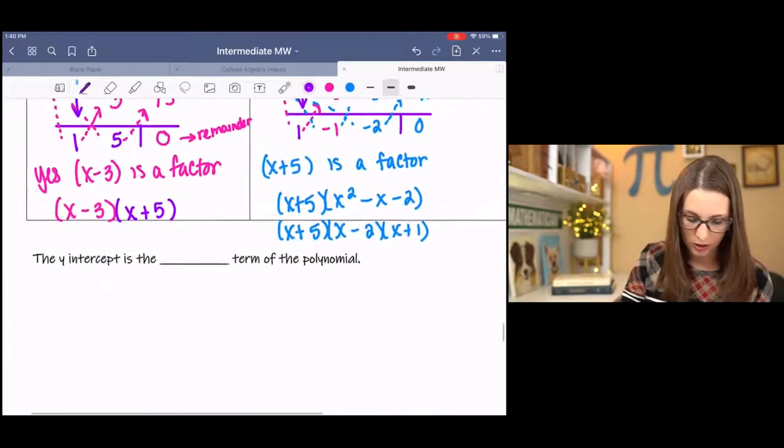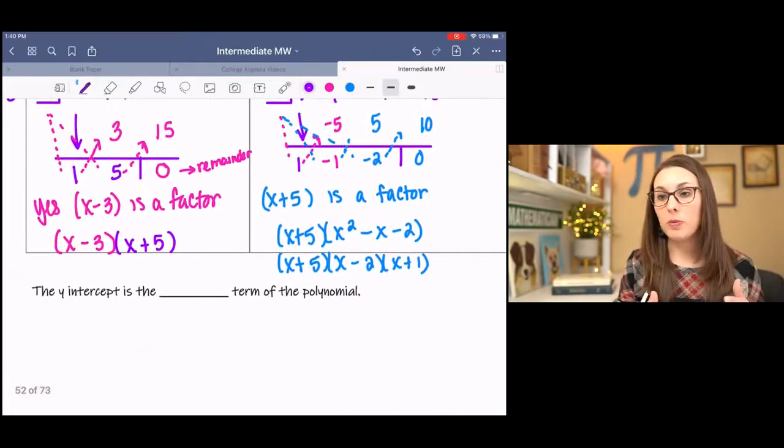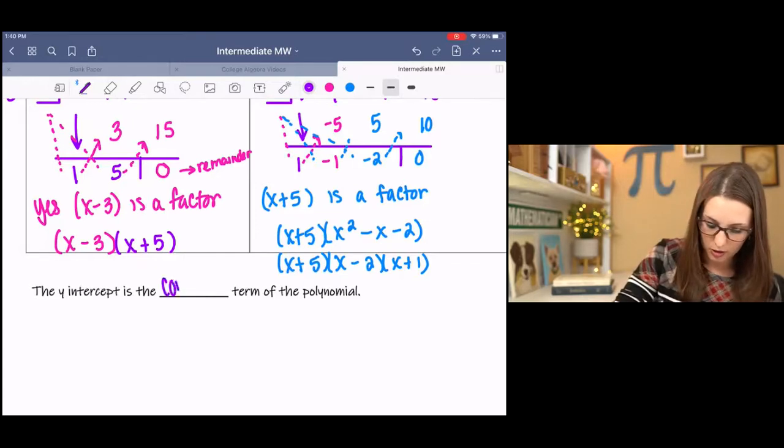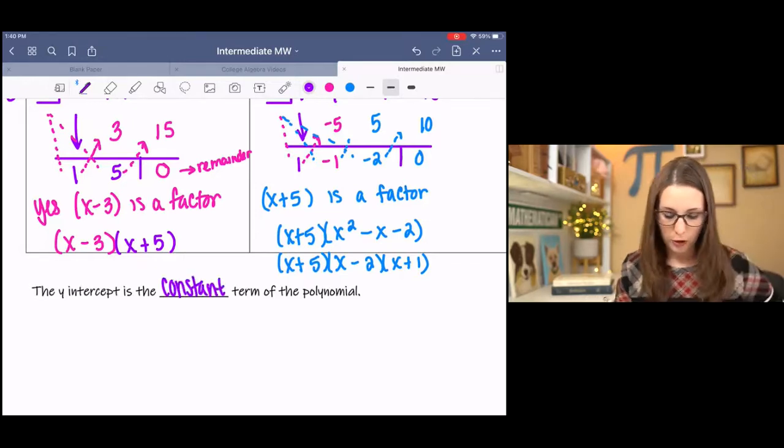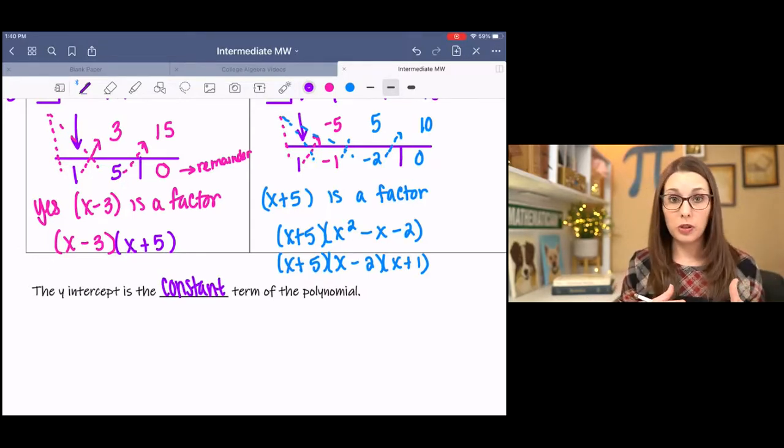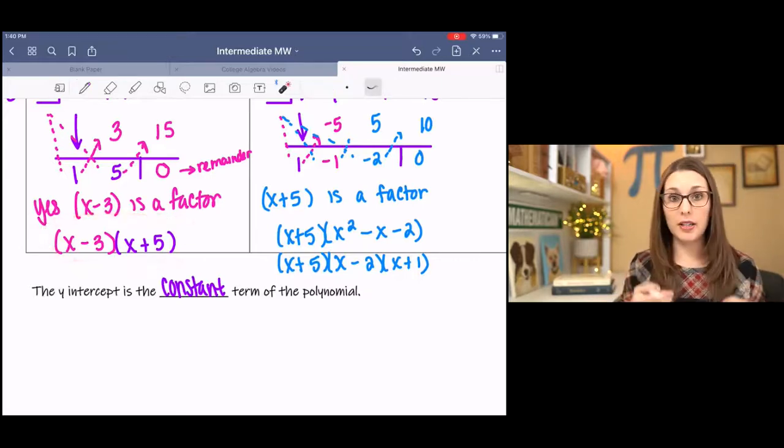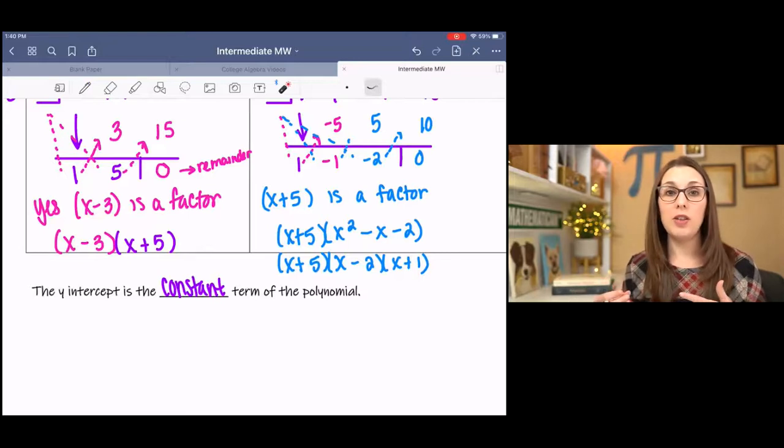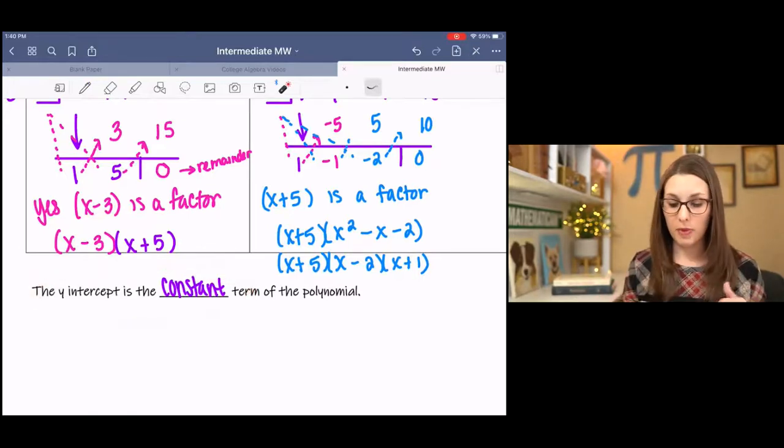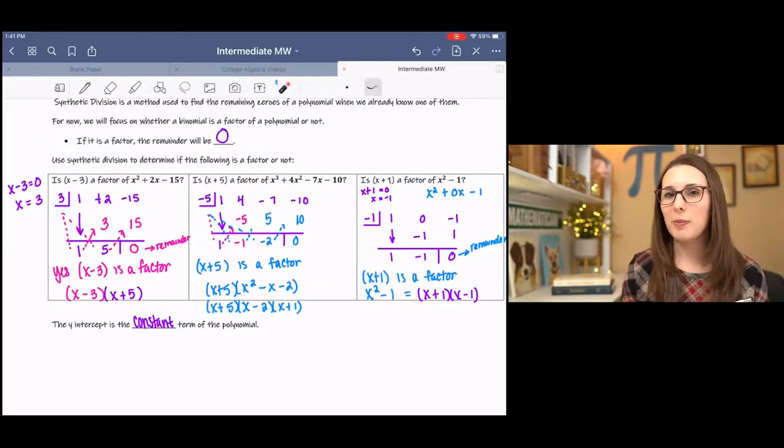And then lastly, just a kind of reminder, when a polynomial is in standard form, the y-intercept is the constant term of the polynomial. If you're graphing, this doesn't have to do with synthetic division, but if you're graphing and you're looking for the x-intercepts, you can use synthetic division to break down into factors to find the x-intercepts. And then you can also see the y-intercept from standard form. That's all I have for synthetic division. I hope you enjoyed it. If you have any questions, please let me know and I'd be happy to help.